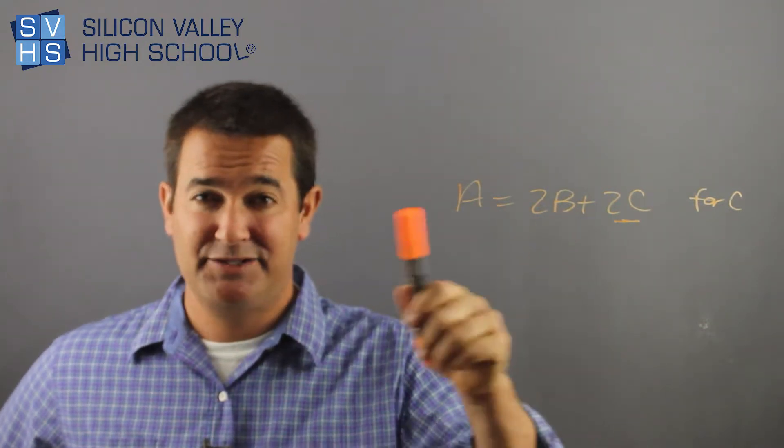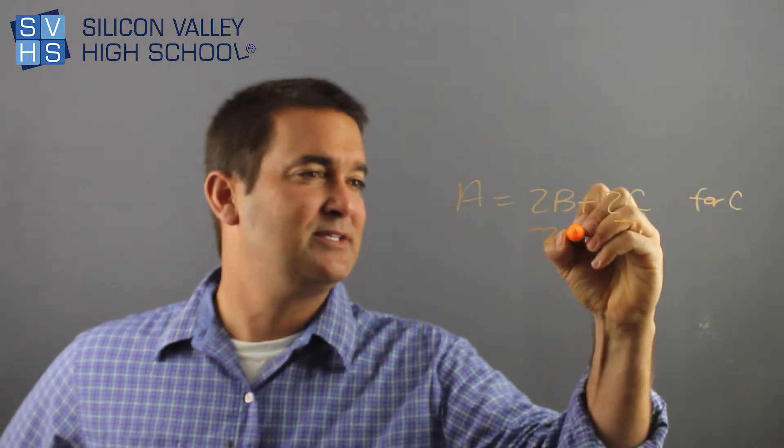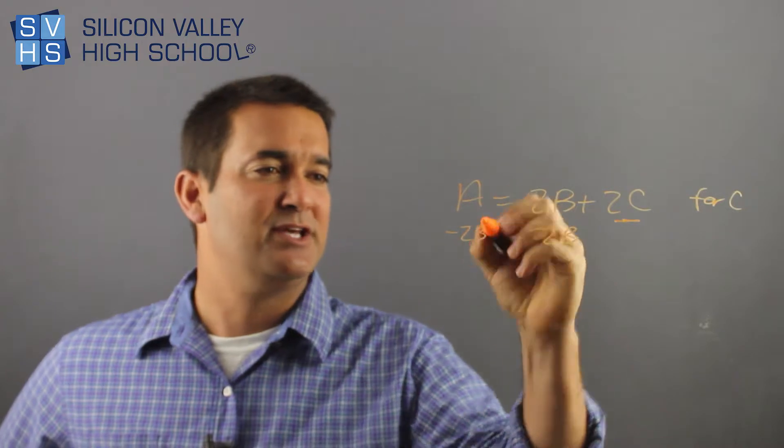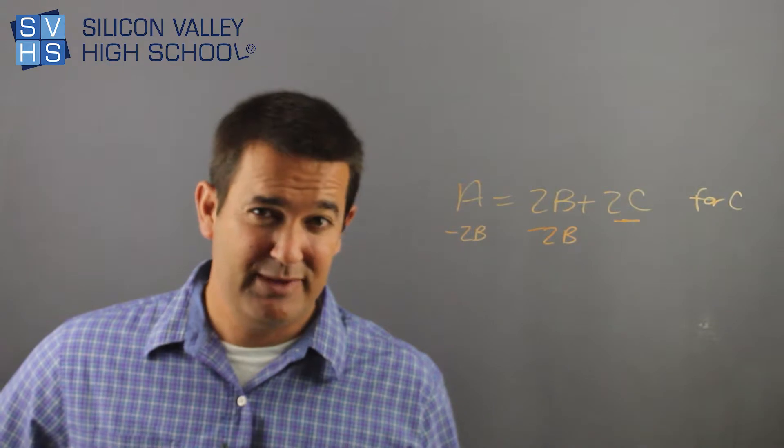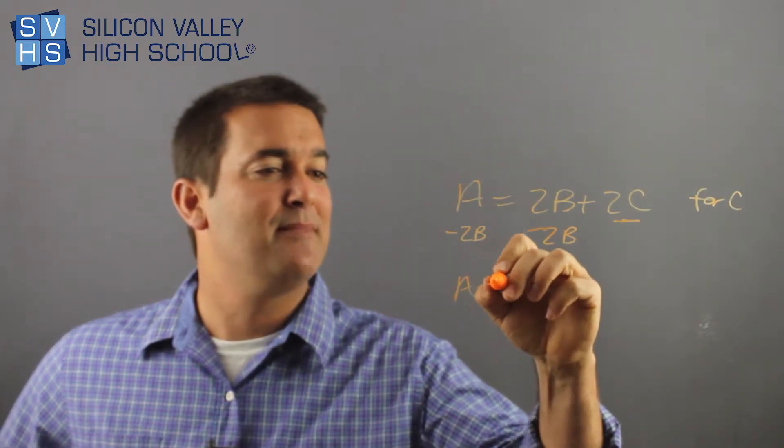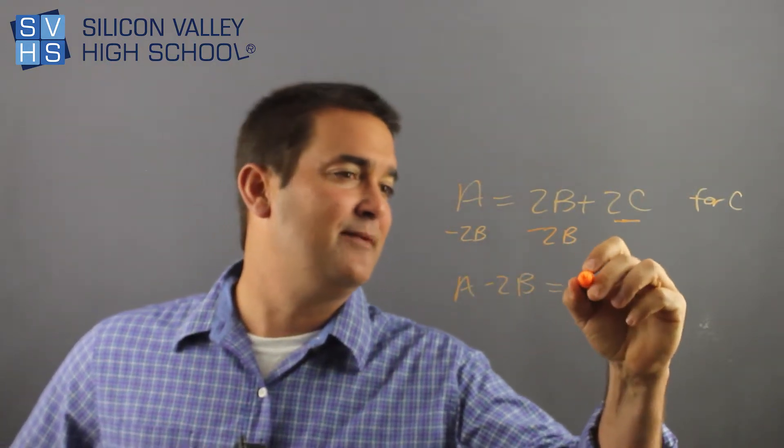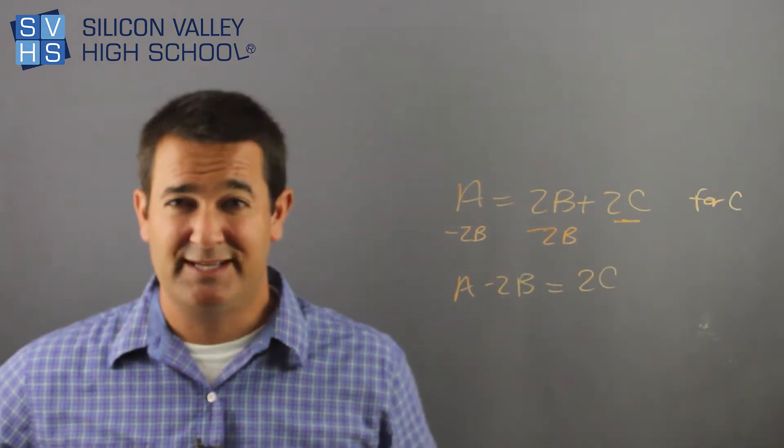But first, I'm going to minus my 2B to both sides. This is one thing that's weird about literal equations. You can't actually do what you want to do. I want to minus 2B. You can't subtract 2B from A. So you actually end up with A minus 2B, and you leave it, right? Equals 2C.